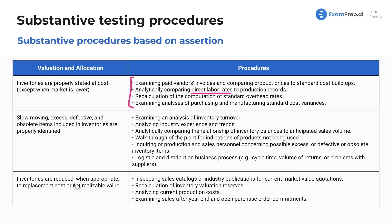Lastly here: inventories are reduced when appropriate to replacement costs or net realizable value. If we identify inventory items as having an issue, we want to write them down. We're going to inspect sales catalogs or industry publications for current market value quotations, recalculate inventory valuation reserves, analyze current production costs, and examine sales after year-end and open purchase order commitments. Make sure you're familiar with these because you could see a SIM such as this — I may even make another SIM just based on these potential procedures for valuation and allocation.